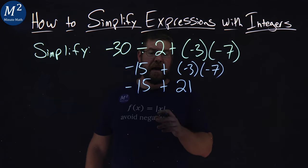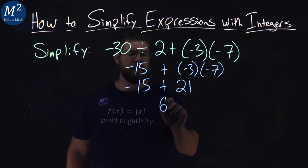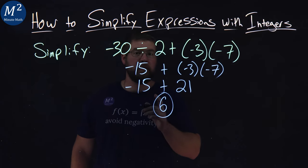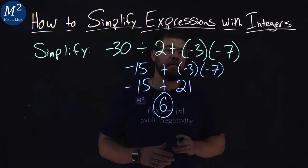From there, we just add: negative 15 plus 21 is positive 6. And there we have it. We took our expression, simplified it, and got positive 6.